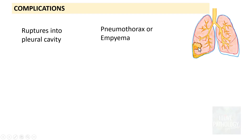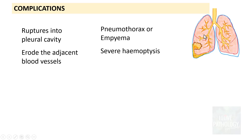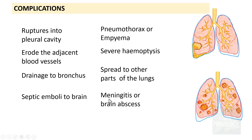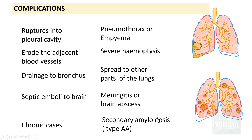What are the complications of lung abscess? It can rupture into the pleural cavity, resulting in pus in the pleural space — called empyema. It can erode into adjacent blood vessels, leading to severe hemoptysis. It can drain into the bronchus and spread to multiple parts of the lungs. Septic emboli can also reach the brain, resulting in meningitis or brain abscesses. In chronic cases, it can result in secondary amyloidosis.